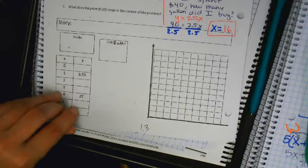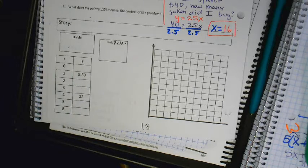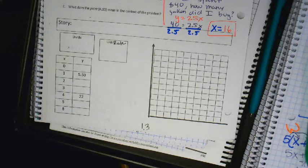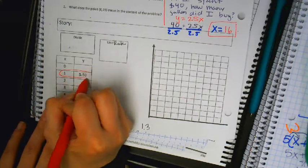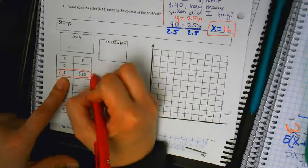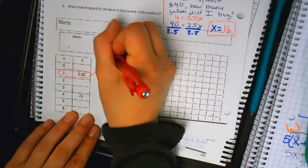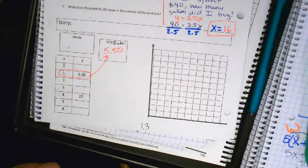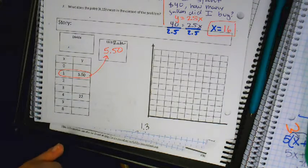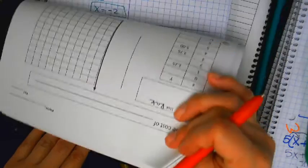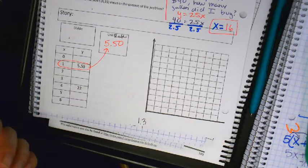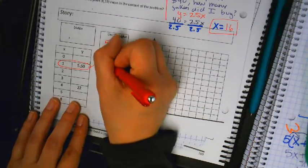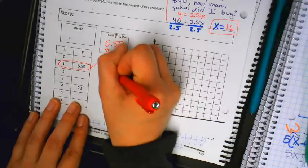Next problem. What's my unit rate? 5.50. Did you do any math? No. So, sometimes they're really nice to you and they give you what the 1 is. So, whatever the 1 is, that's just your unit rate. No math involved. Can you fill out the table, adding 550 each time?